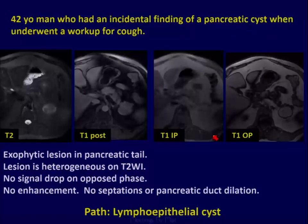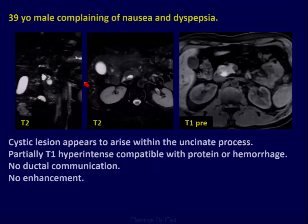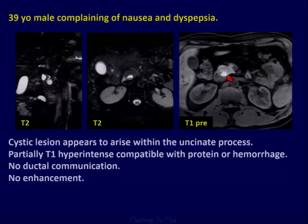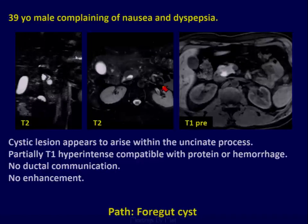It can be very challenging when you're dealing with pancreatic or peripancreatic lesions. Here's another example: a patient with nausea and dyspnea — symptomatic. This is a T2 bright lesion, also T1 bright, suggesting maybe hemorrhage or protein with some layering. No ductal communication, no internal enhancement, no mural nodules, no dilated pancreatic duct. This was pathologically a foregut cyst.